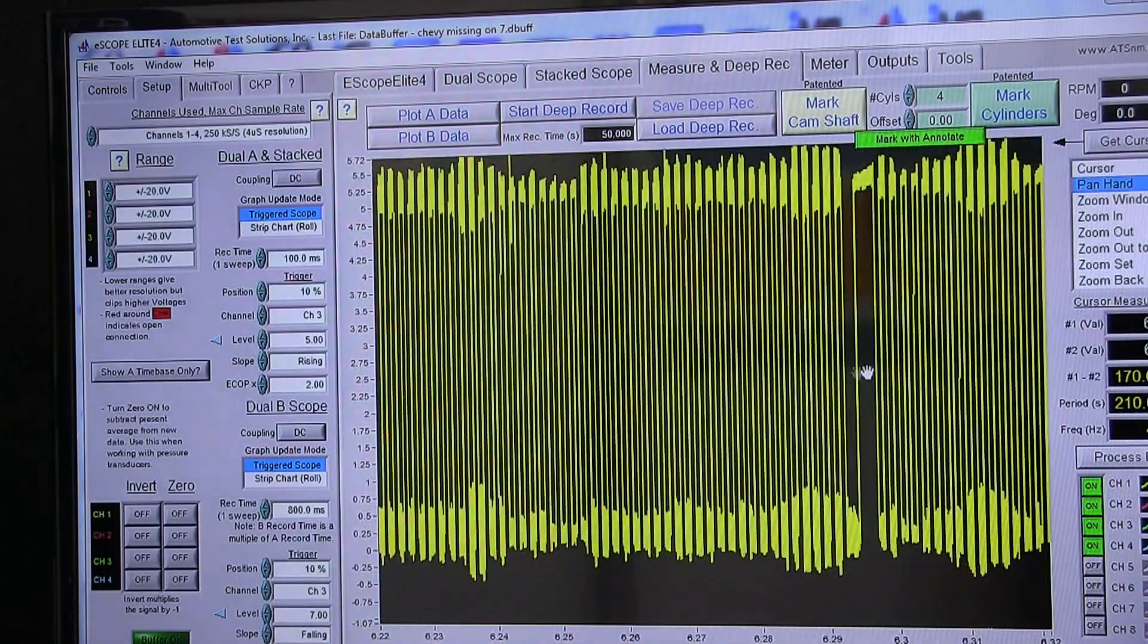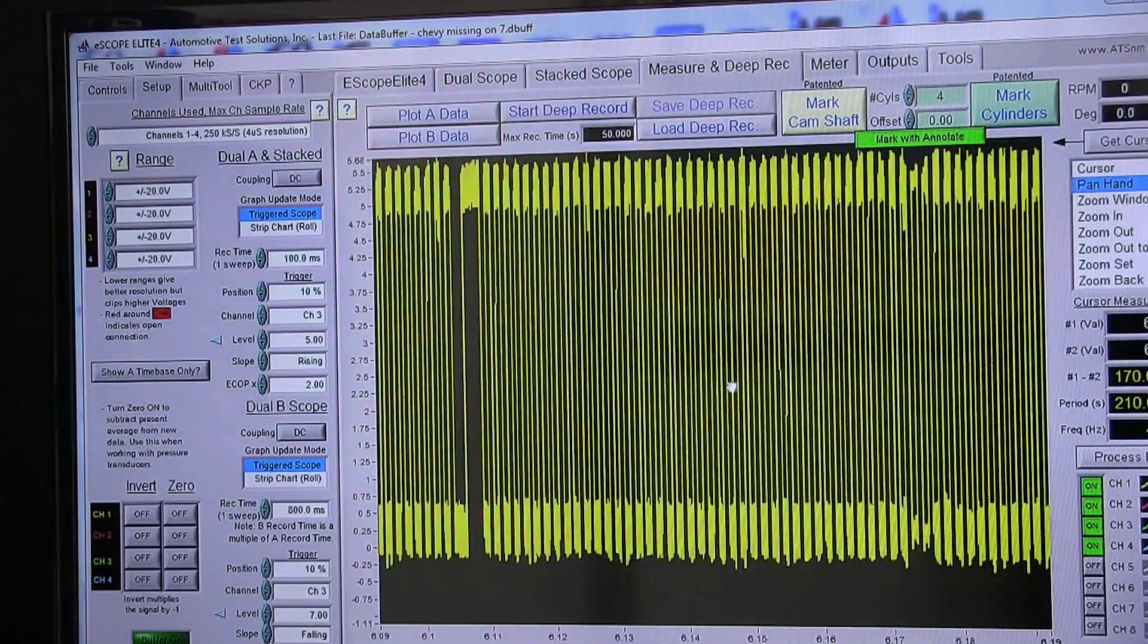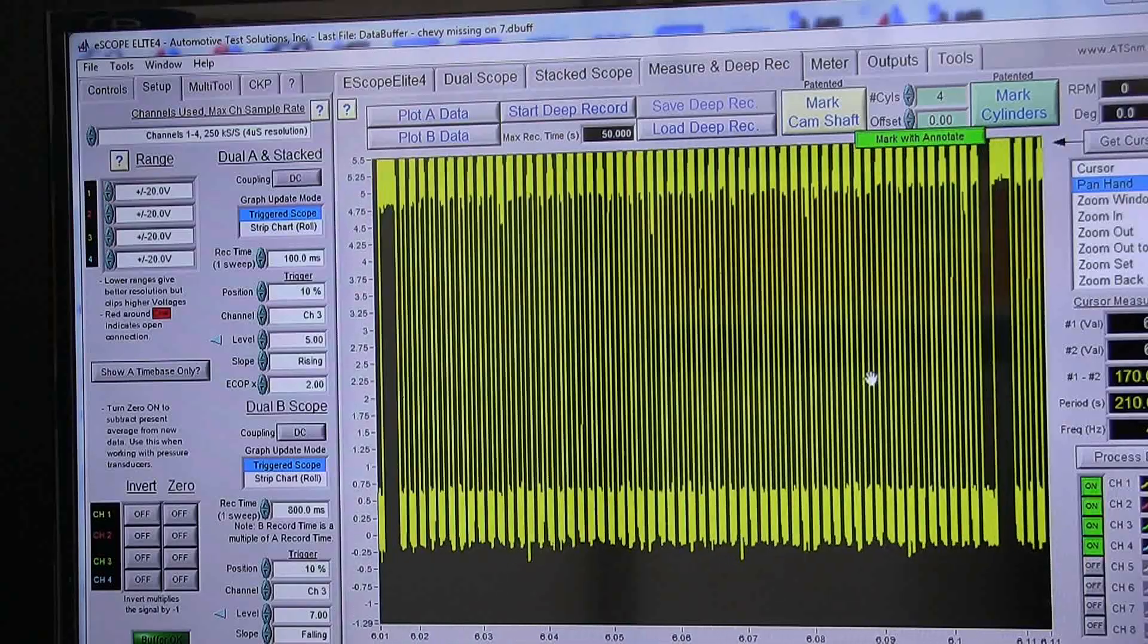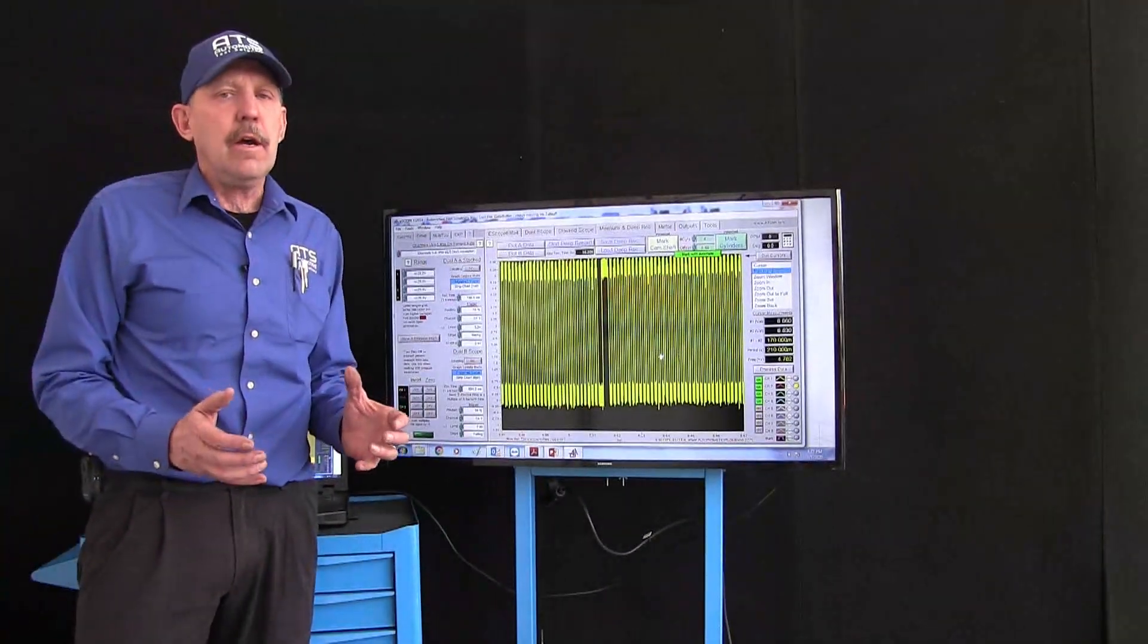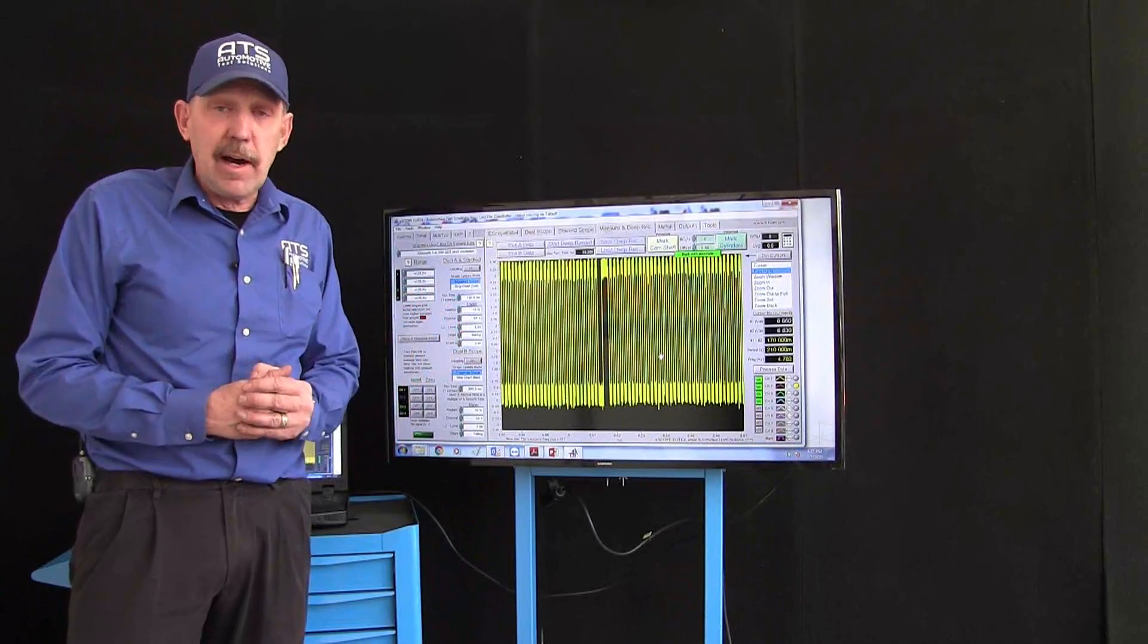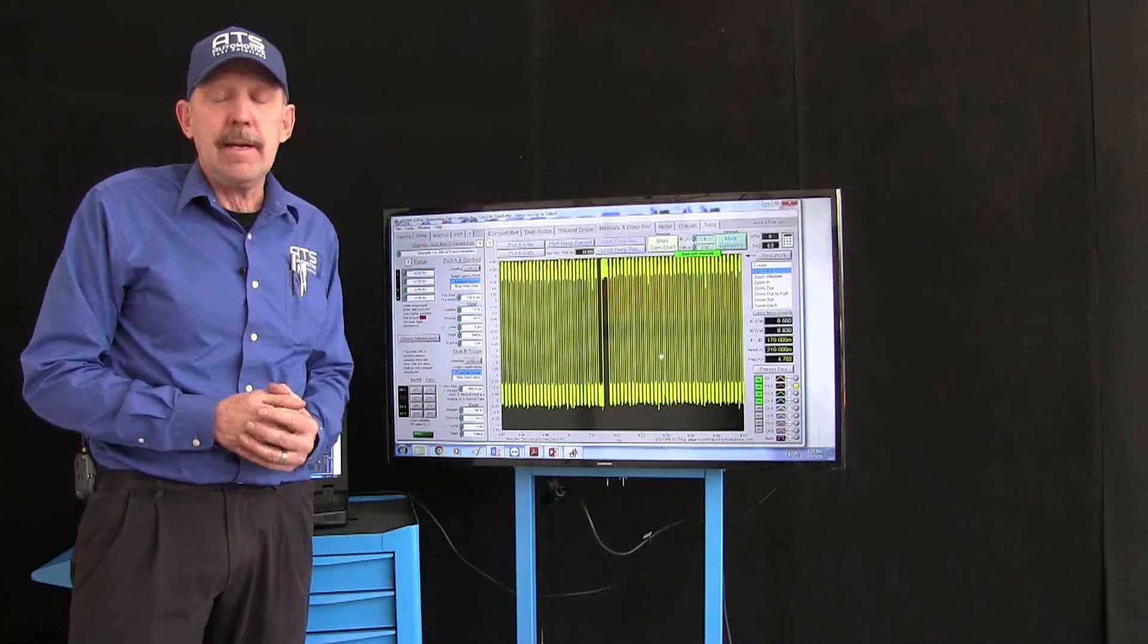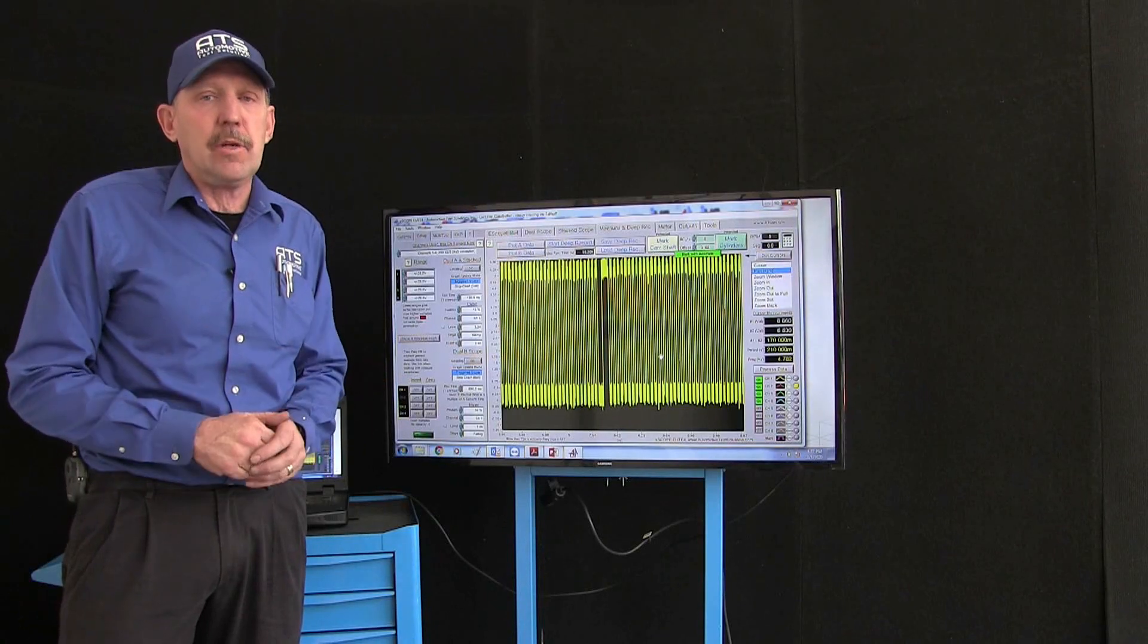So here we've got the crank sensor and we can go through this crank sensor and we can see that from this crank sensor it's just going to be really hard to find what misfiring cylinders there are from that. I mean this could be really difficult to impossible.